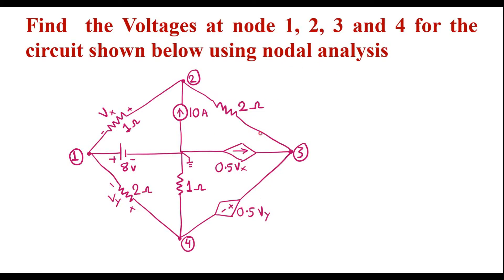This is the given circuit. Here we have nodes 1, 2, 3, and 4. We need to find voltages at these 4 nodes using nodal analysis. This is the reference node — its voltage is 0.